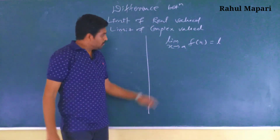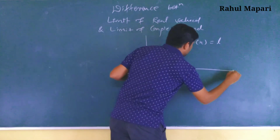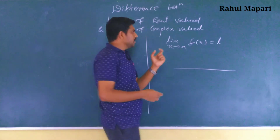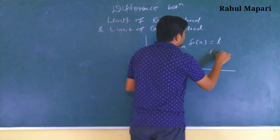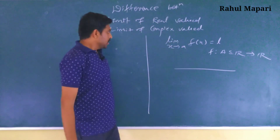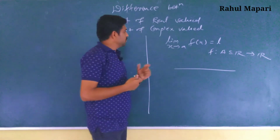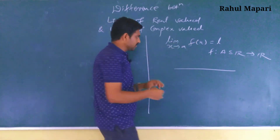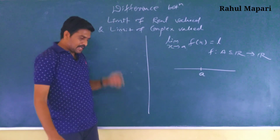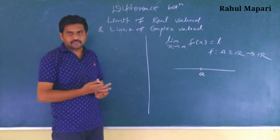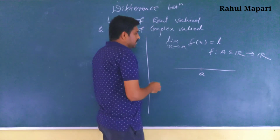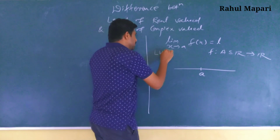These symbols mean that the domain of f of x is a subset of the real numbers — f maps from a subset A of R to R. Now, how do we check the limit at x equals a of f of x? When the domain is a subset of R, we check the left-hand limit and the right-hand limit.